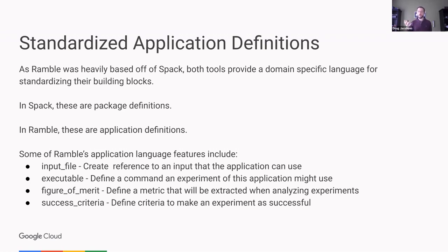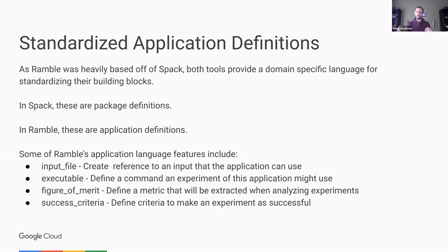I only have things that test applications with inputs right now — that's not to say we couldn't write other things; it's very flexible. Some of the application language features in the standardized application definition are input files, executables, figures of merit, and success criteria. You can see how you might piece together a command that is part of running an experiment from an application, pair it with input files to generate workloads, and then figures of merit and success criteria are things you extract once the experiment is done to determine what performance metrics to track and if the experiment is a success or failure.